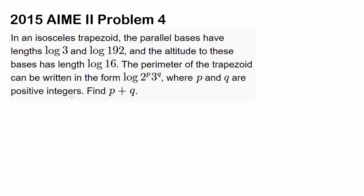This is 2015 AIME II problem 4. In an isosceles trapezoid, we have a trapezoid, a quadrilateral with two parallel bases and two equal legs.